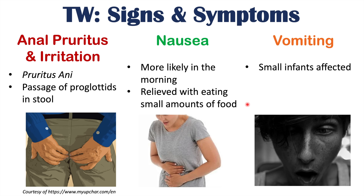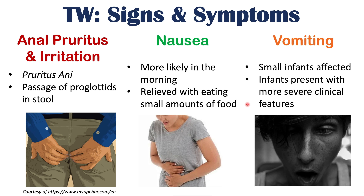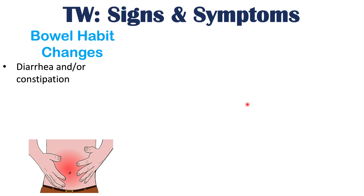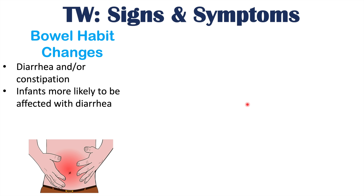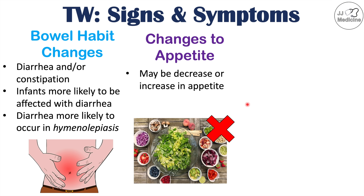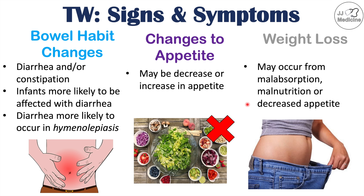Patients can also have vomiting, although this is more rare and oftentimes only occurs in small infants, who tend to present with more severe clinical features. There can also be bowel habit changes — either diarrhea or constipation. Infants and young children are more likely to have diarrhea, though overall these are more rare findings. Diarrhea is most likely to occur in hymenolepiasis, the Hymenolepis nana infection. Tapeworm infections can also lead to changes in appetite — either increased or decreased — and weight loss, which often occurs from malabsorption as the tapeworm absorbs nutrients from the patient.